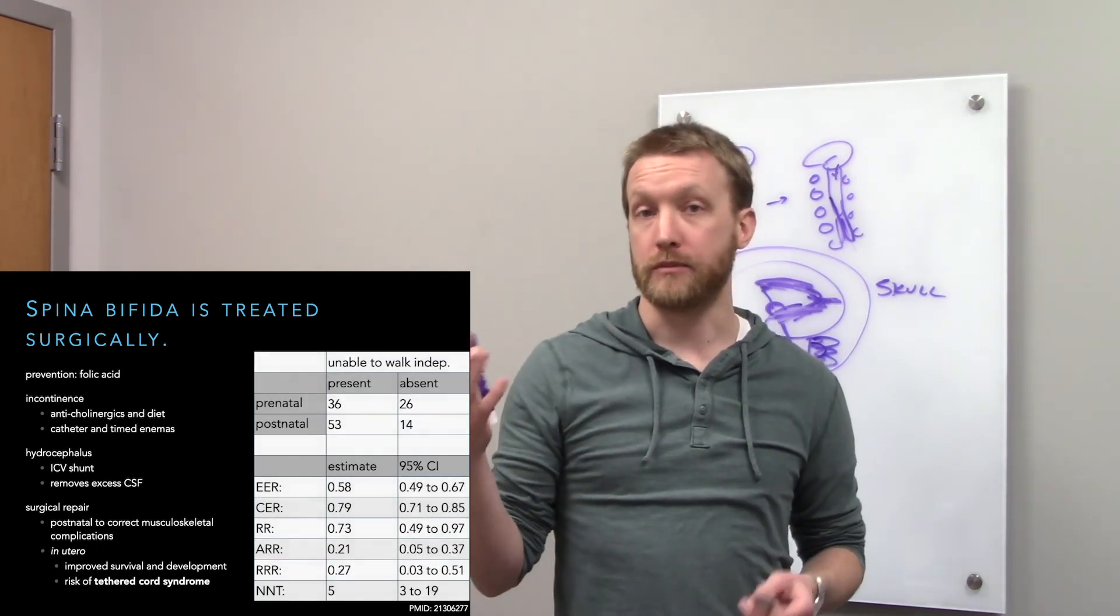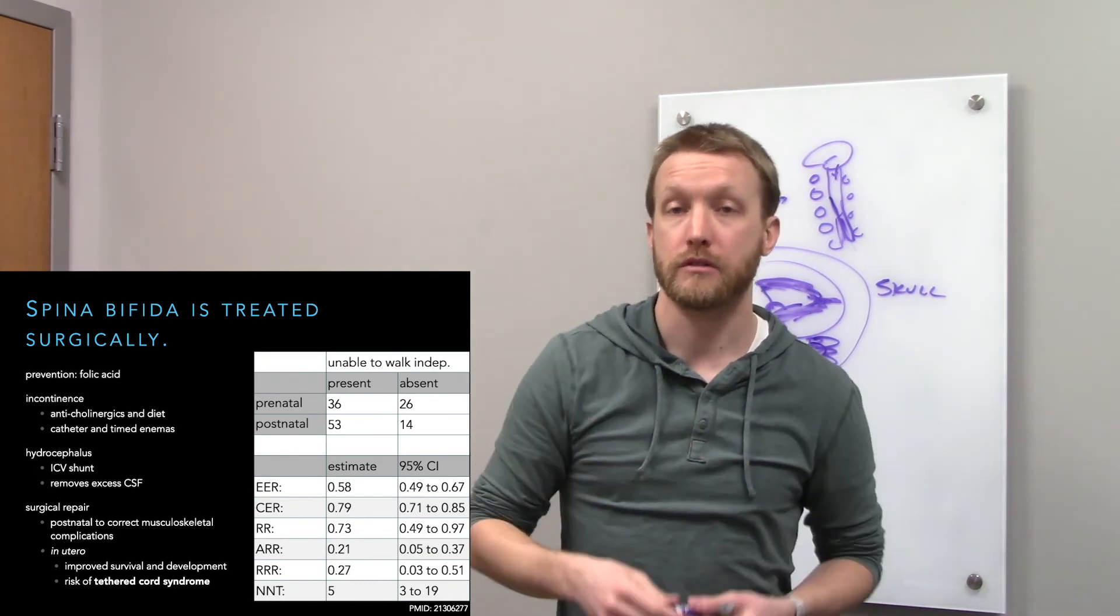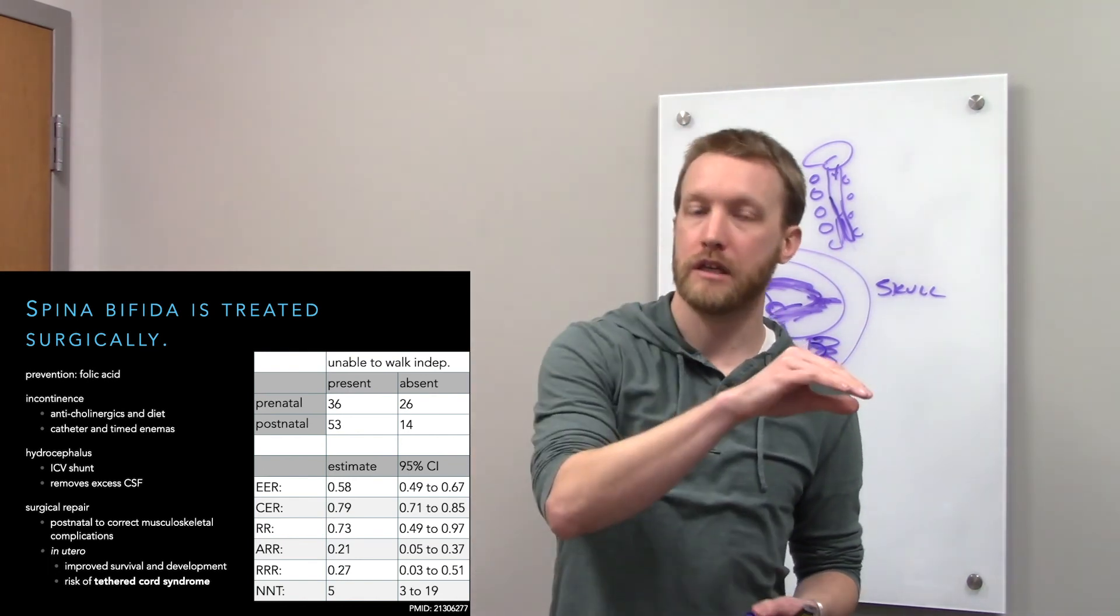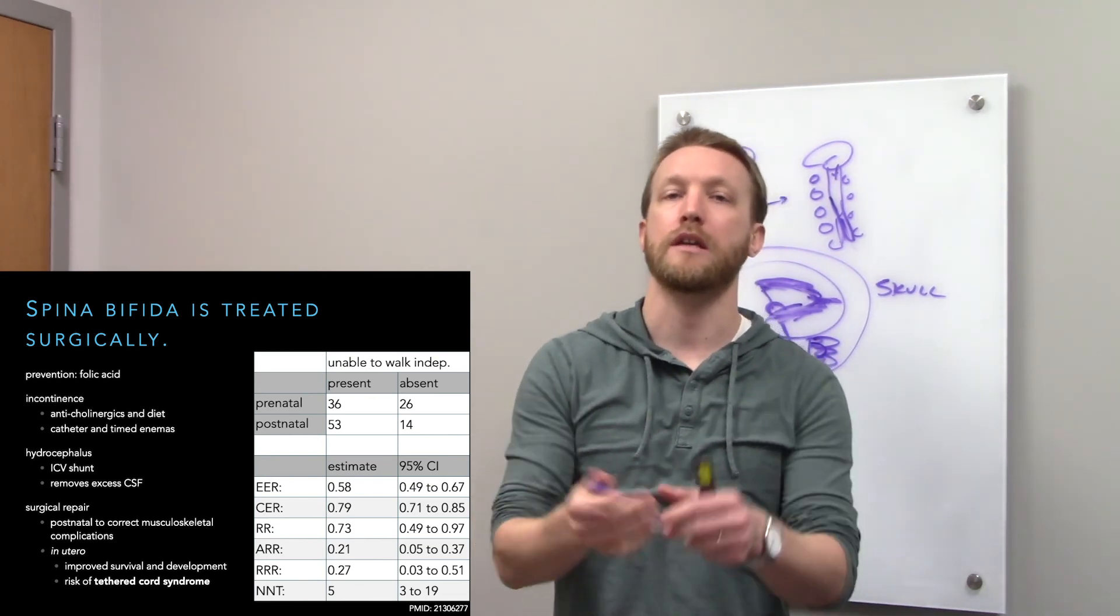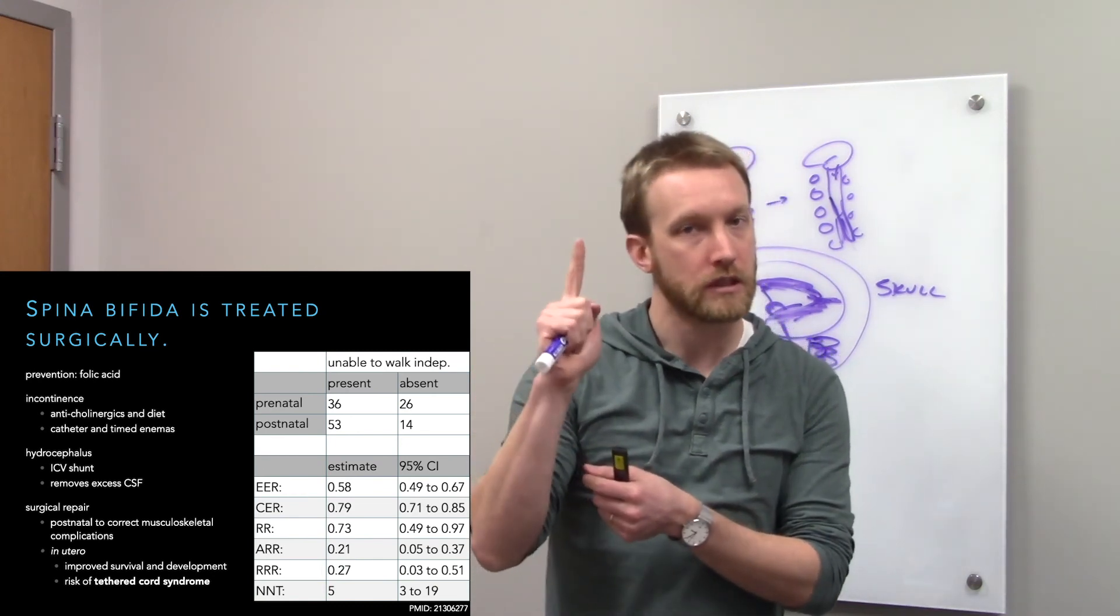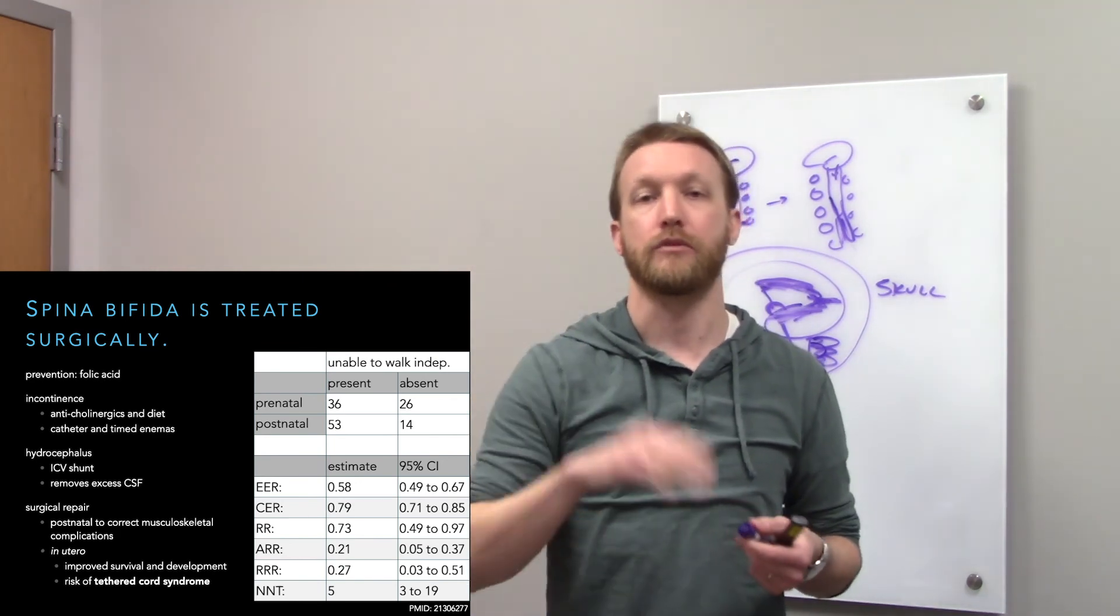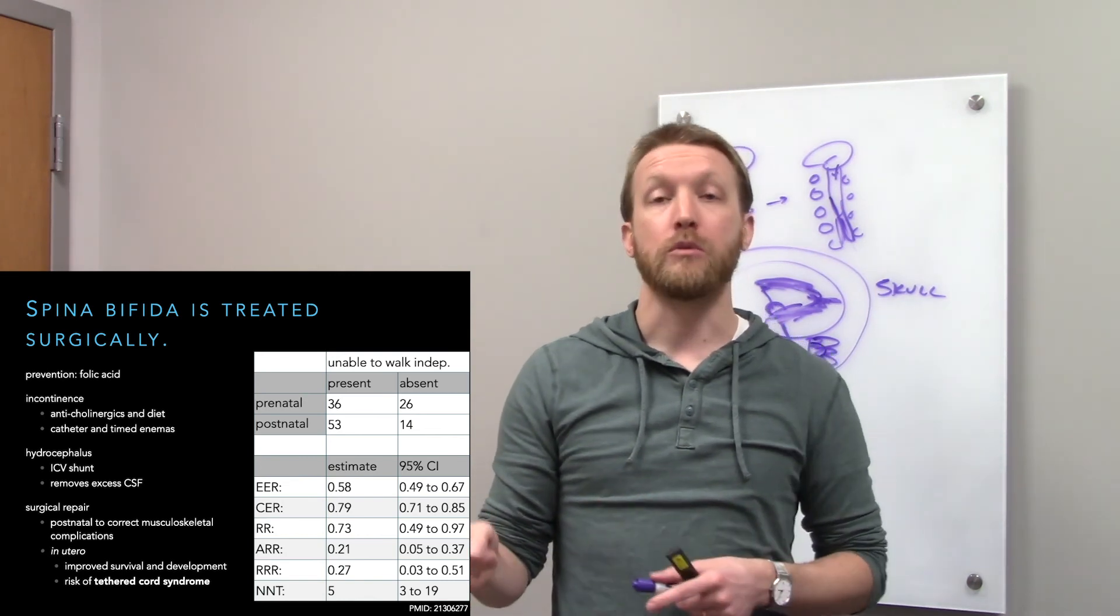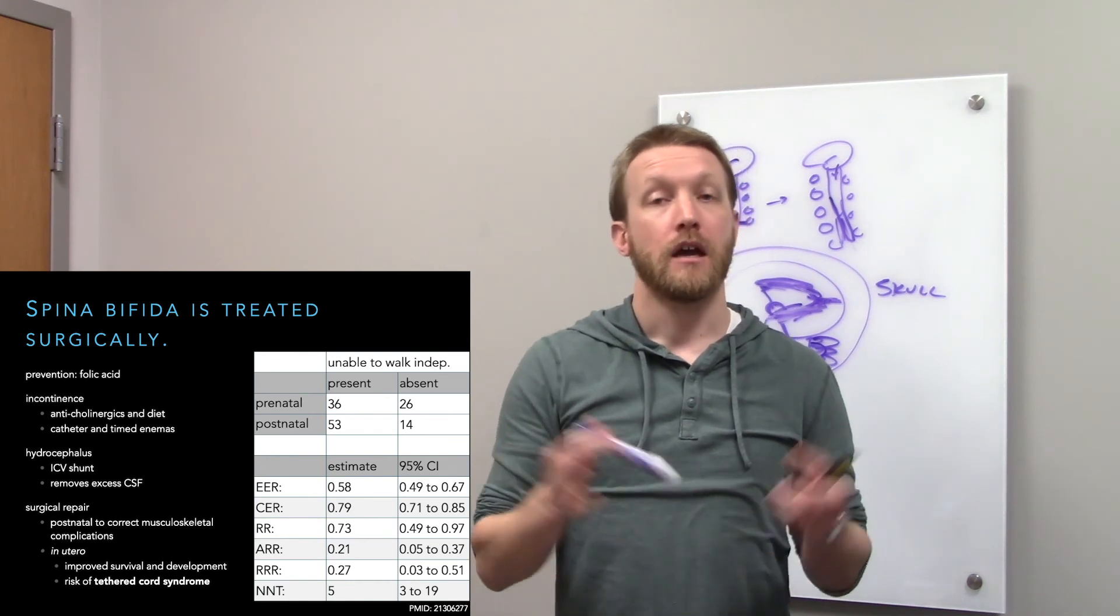How about functional outcomes? The ability to walk seems to be much better with prenatal surgery. The event rates, you can see down here, a little bit lower than our Chiari malformation. Relative risk, 0.73. So we have lower risk with prenatal surgery. 95% confidence interval doesn't include one, so it's a significant reduction in risk. Number needed to treat five. So for every five kids that get prenatal surgery instead of postnatal surgery, we will have one additional child who can walk independently.